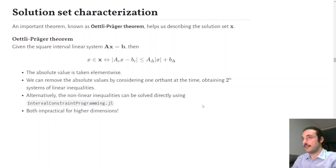And there's a theorem called the Oettli-Prager theorem, which can be used to characterize the solution set X. And this theorem tells us that the system of linear equalities is equivalent to a system of real inequalities. So, at least in principle, we can describe explicitly the solution set X by solving this system of real inequalities. However, it's good to know that this approach actually has exponential complexity, so not feasible for higher dimensions.